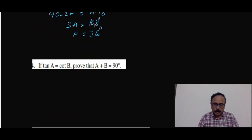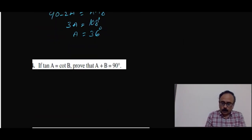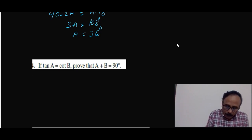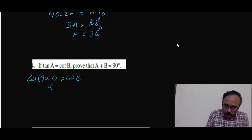For the fourth problem, tan A = cot B can be written as cot(90 minus A) = cot B. By equating the two angles, 90 minus A equals B, therefore A plus B equals 90 degrees.